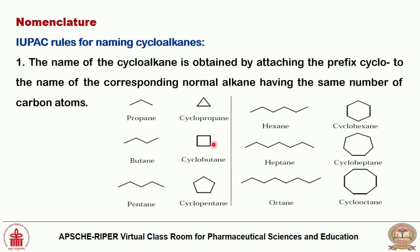Examples: propane (three-membered alkane) becomes cyclopropane; butane becomes cyclobutane; pentane (five-membered) becomes cyclopentane; likewise hexane becomes cyclohexane, heptane becomes cycloheptane, octane becomes cyclooctane. By attaching the prefix 'cyclo' to the alkane name, we give the nomenclature for the cycloalkane corresponding to the respective number of carbon atoms.